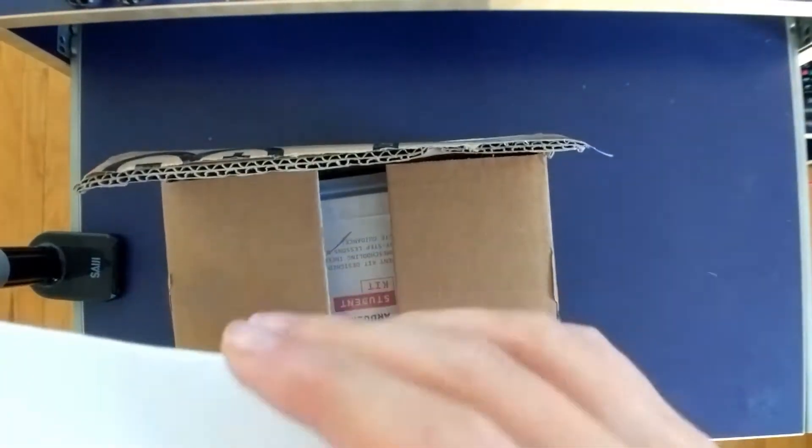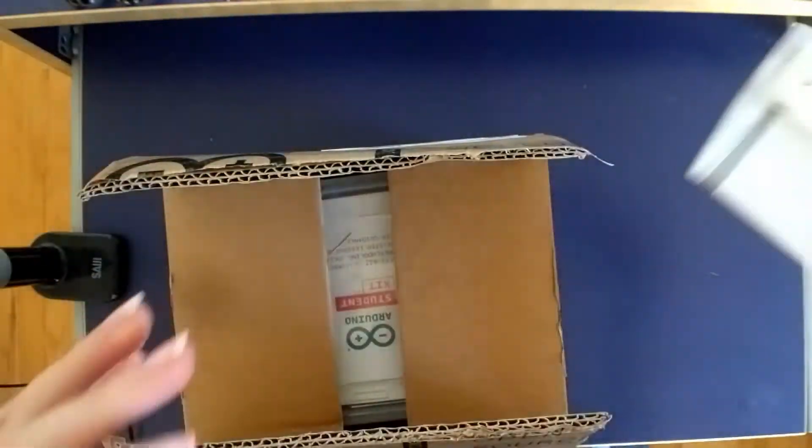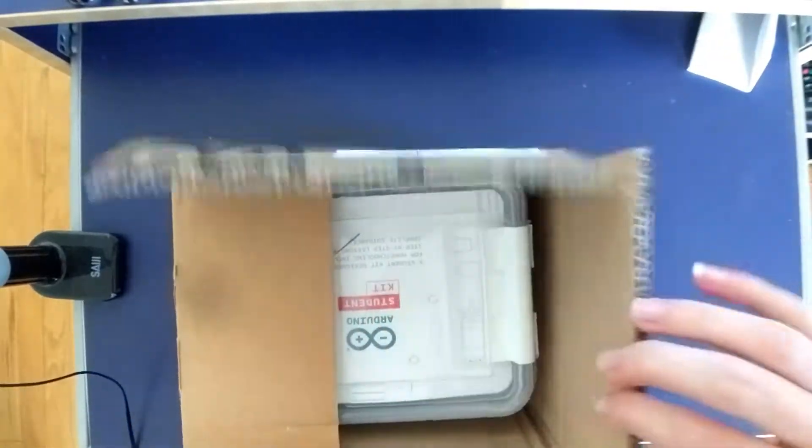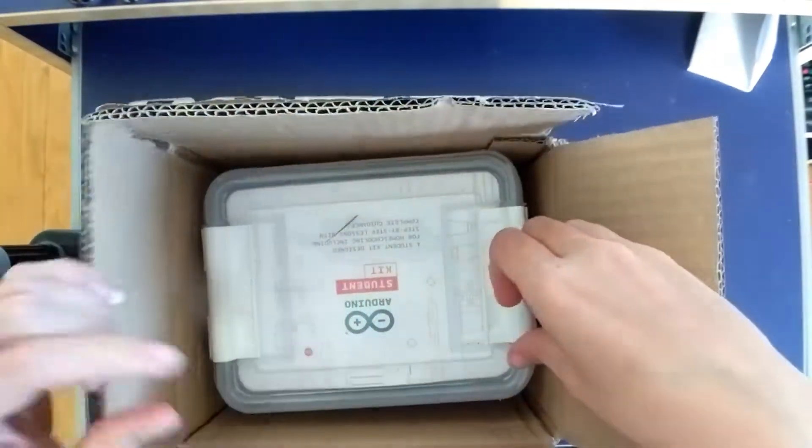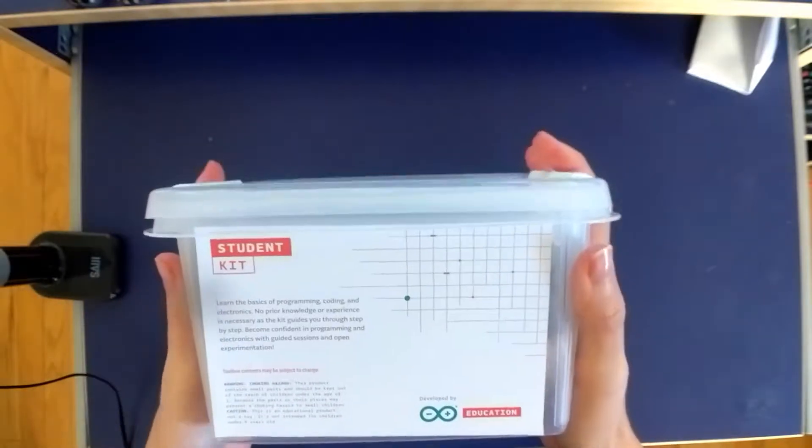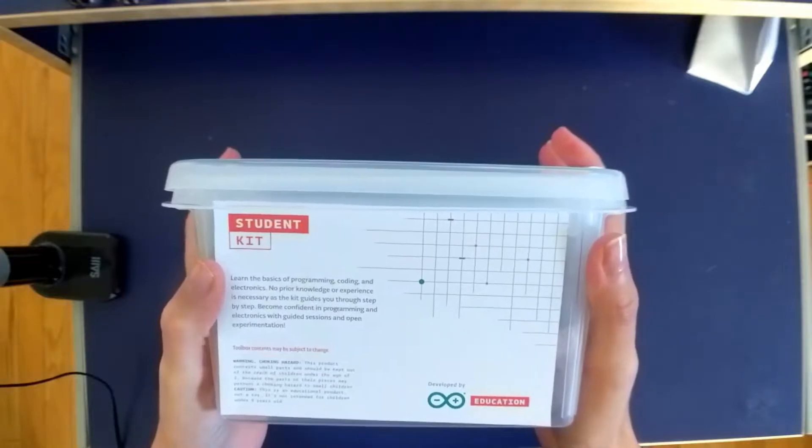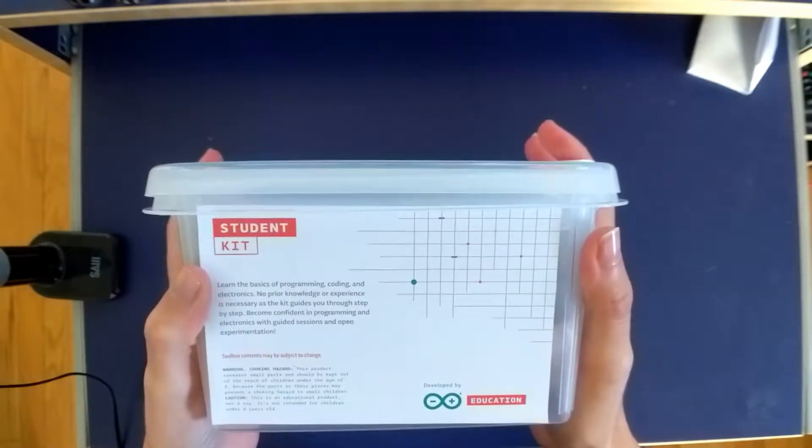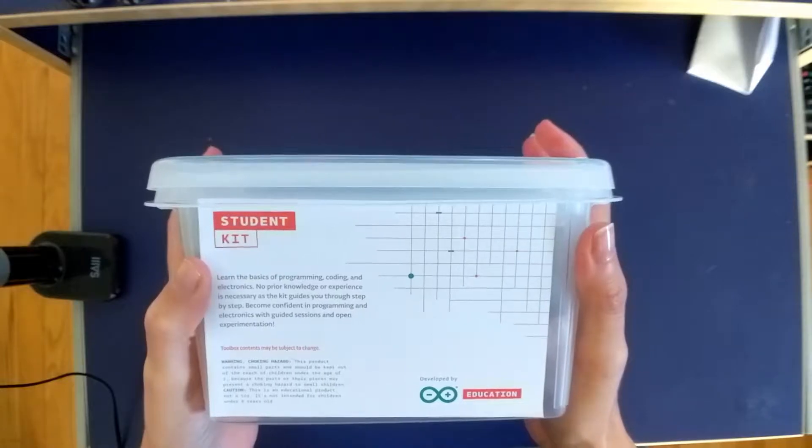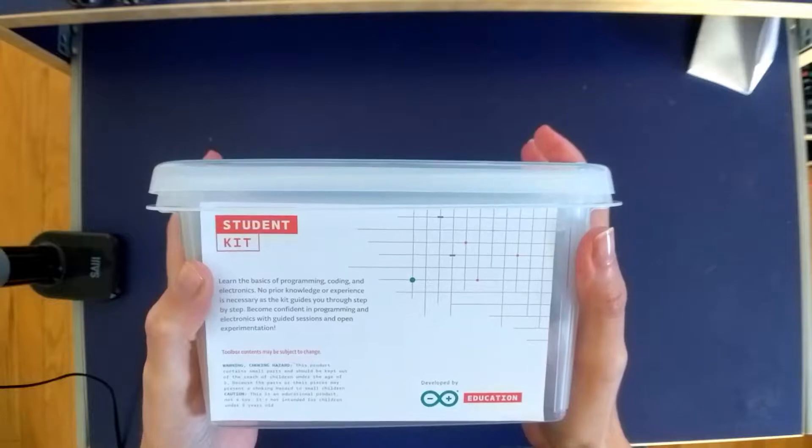All right, so this is what it looks like. It's a nice little box. Student kit. One of the basics of programming, coding, and electronics. No prior knowledge or experiences necessary as the kit guides you through step by step. Become confident in programming and electronics with guided sessions and open experimentation.